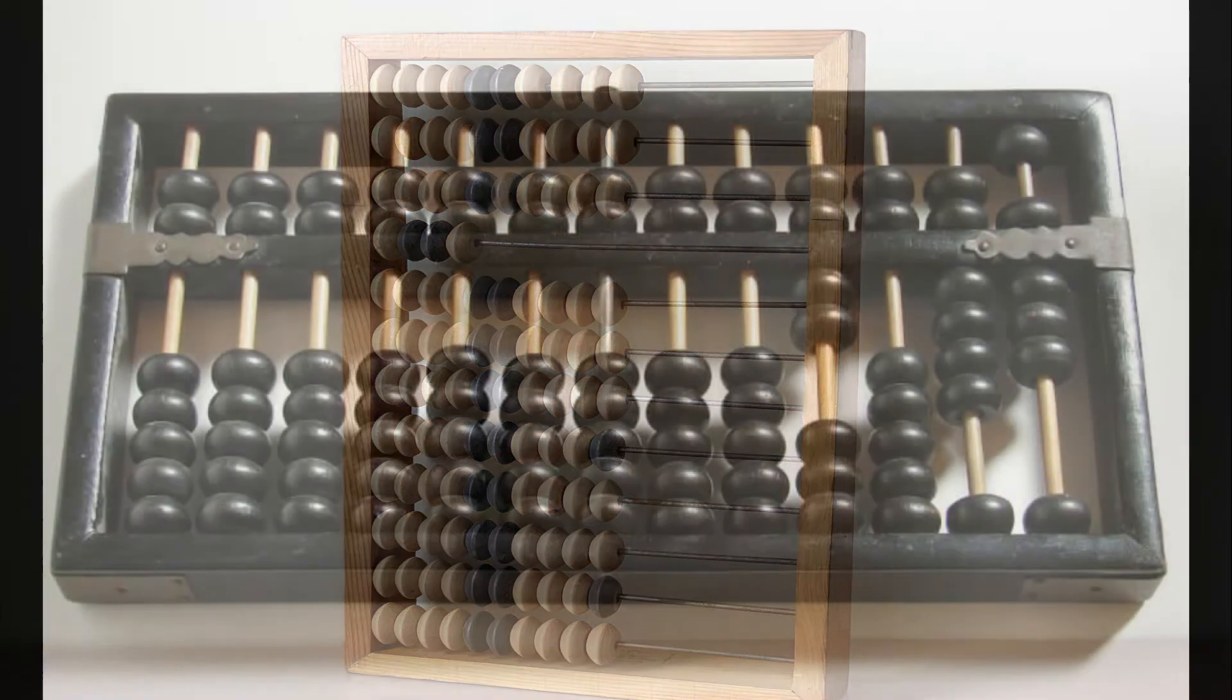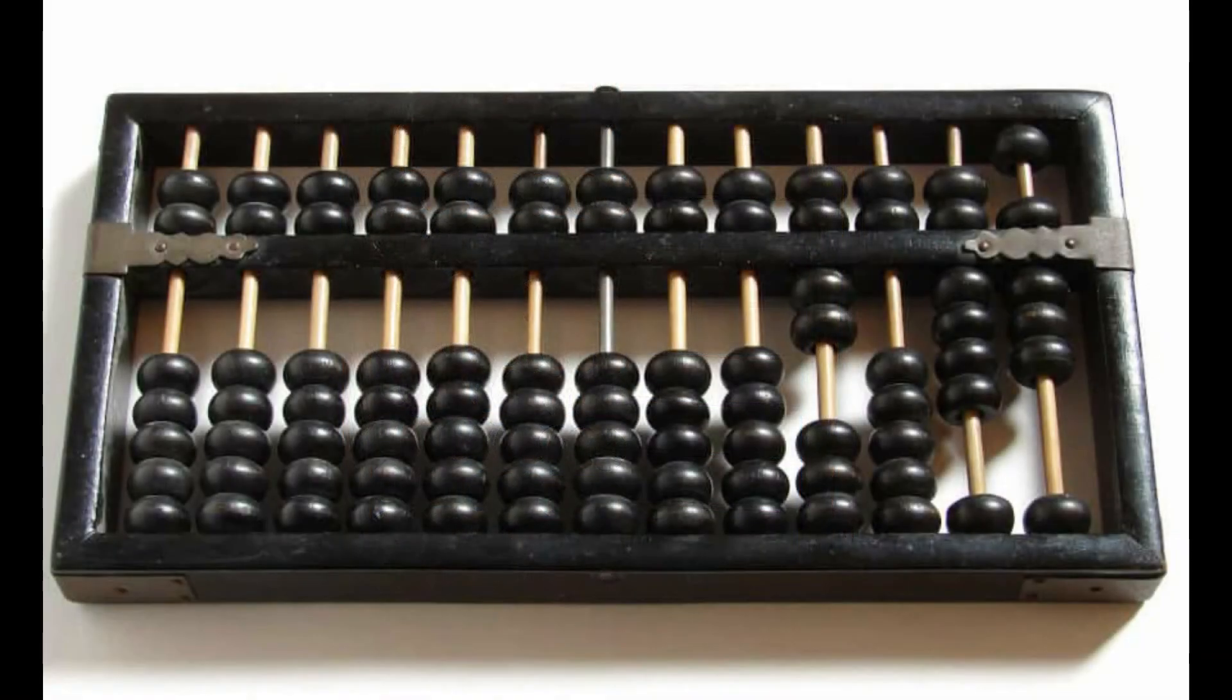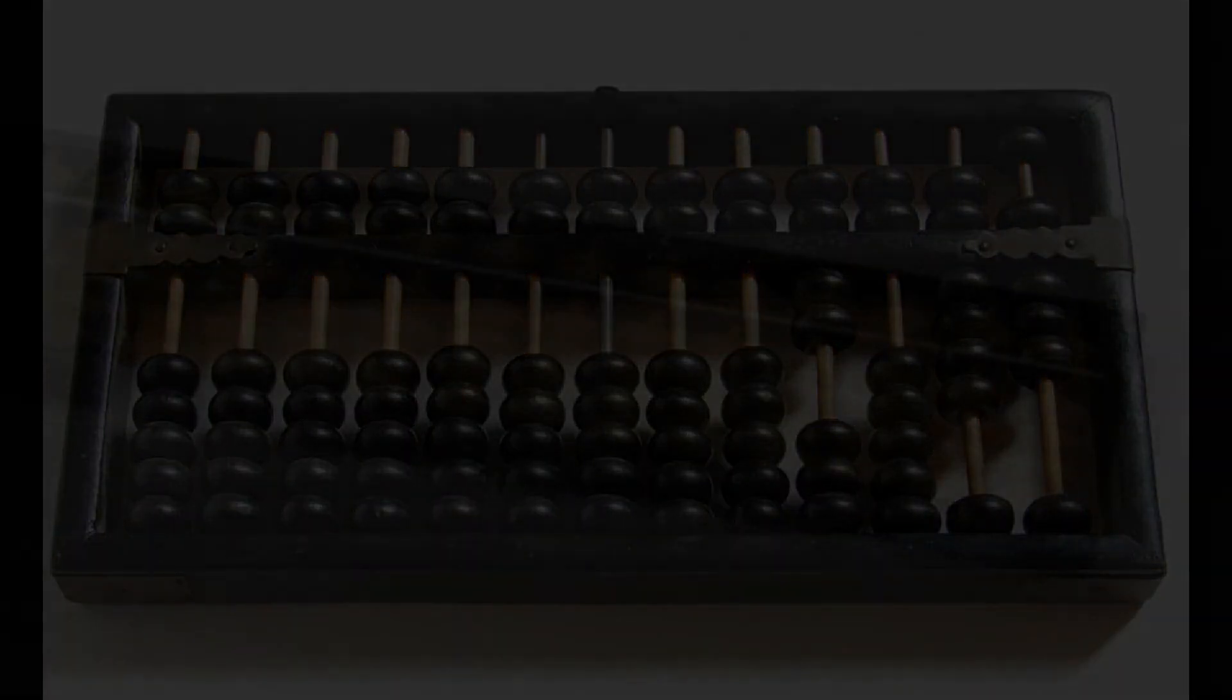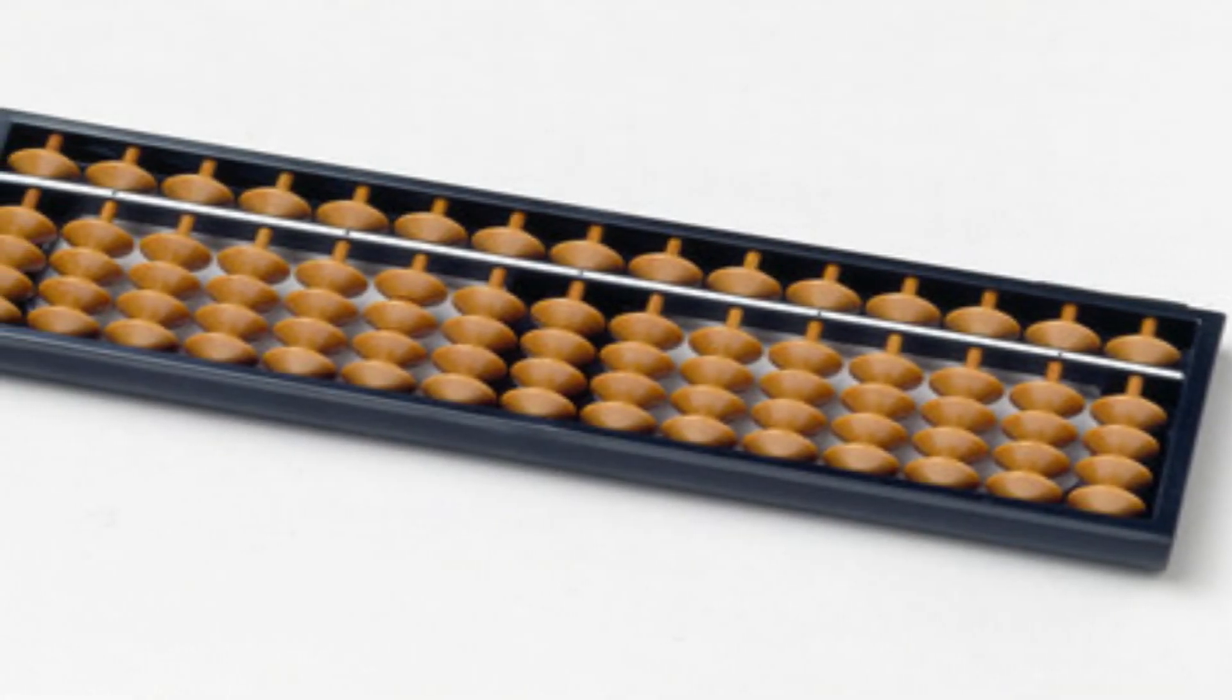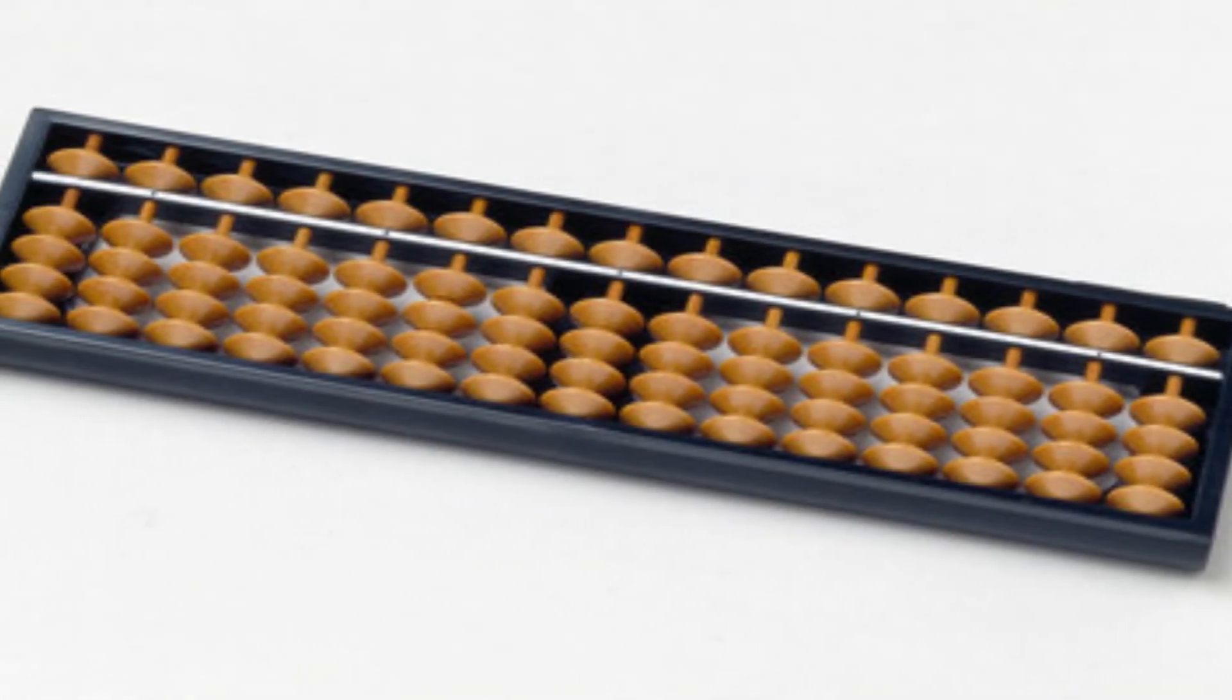The swanpan, one of the innovative Chinese abacuses, had two-fifths decks but it had more difficulty, so it was replaced by a Japanese soroban abacus which was improved by a popular mathematician Seki Kowa. Seki Kowa removed one bead from the upper and lower decks, making the abacus one-fourth decks.